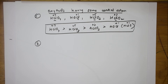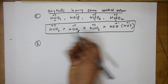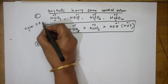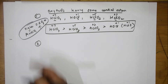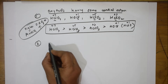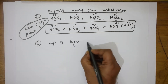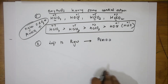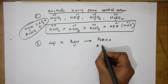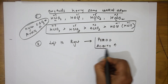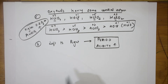Now remember one more key concept: when you move from left to right in the periodic table in a period, acidity increases. This is a very important key point. In a period, acidity increases as you move left to right.